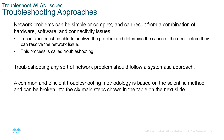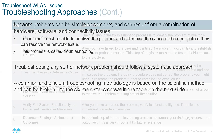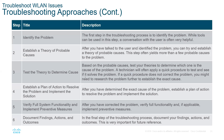At this stage, you probably understand the importance as an engineer. Knowing how to identify a problem and how to fix it is very important. Troubleshooting of any problem should be done following a systematic approach. A common and efficient troubleshooting methodology is based on the scientific method and can be broken down into six main steps. Experience is the best teacher — the more problems you solve, the better you know how to approach them.